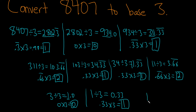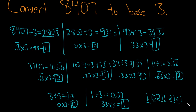Reading backwards, the digits are: 1, 0, 2, 1, 1, 2, 1, 0, 1. And this is in base 3.